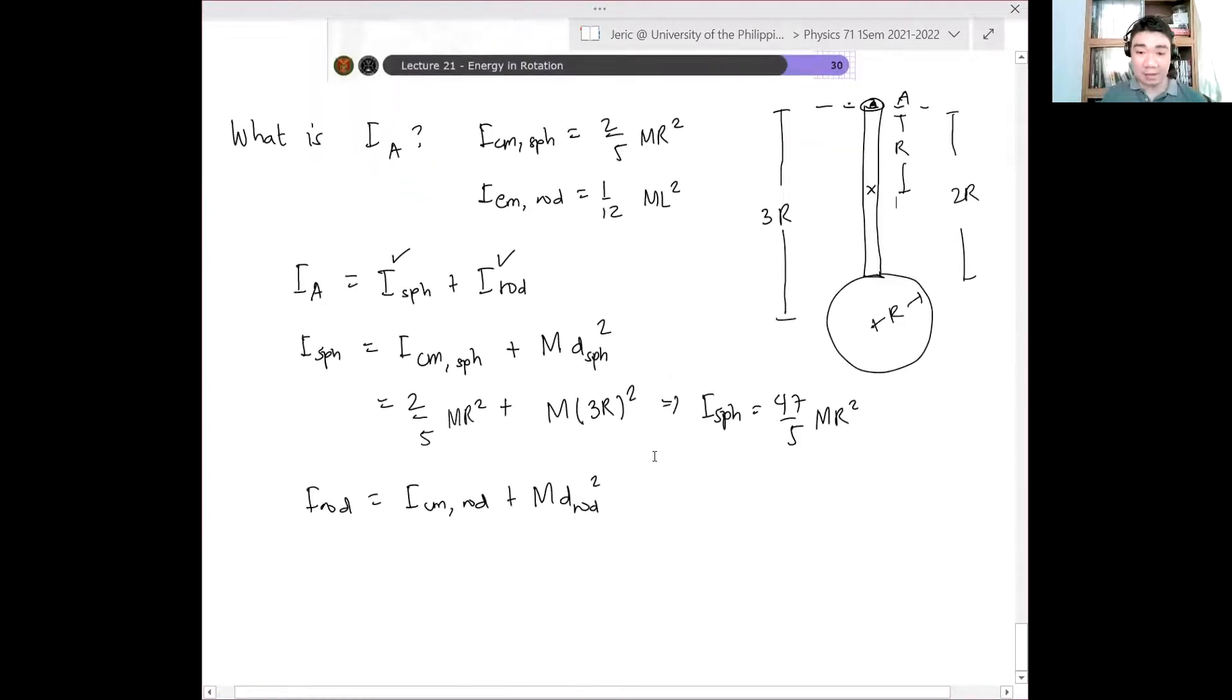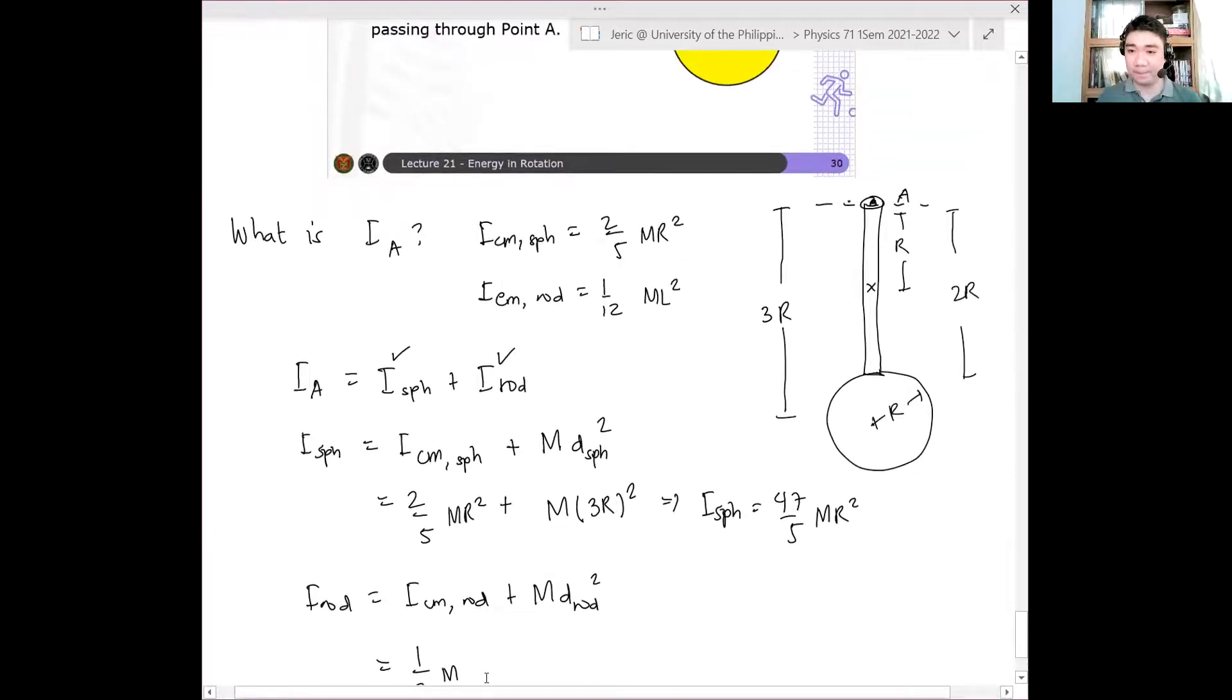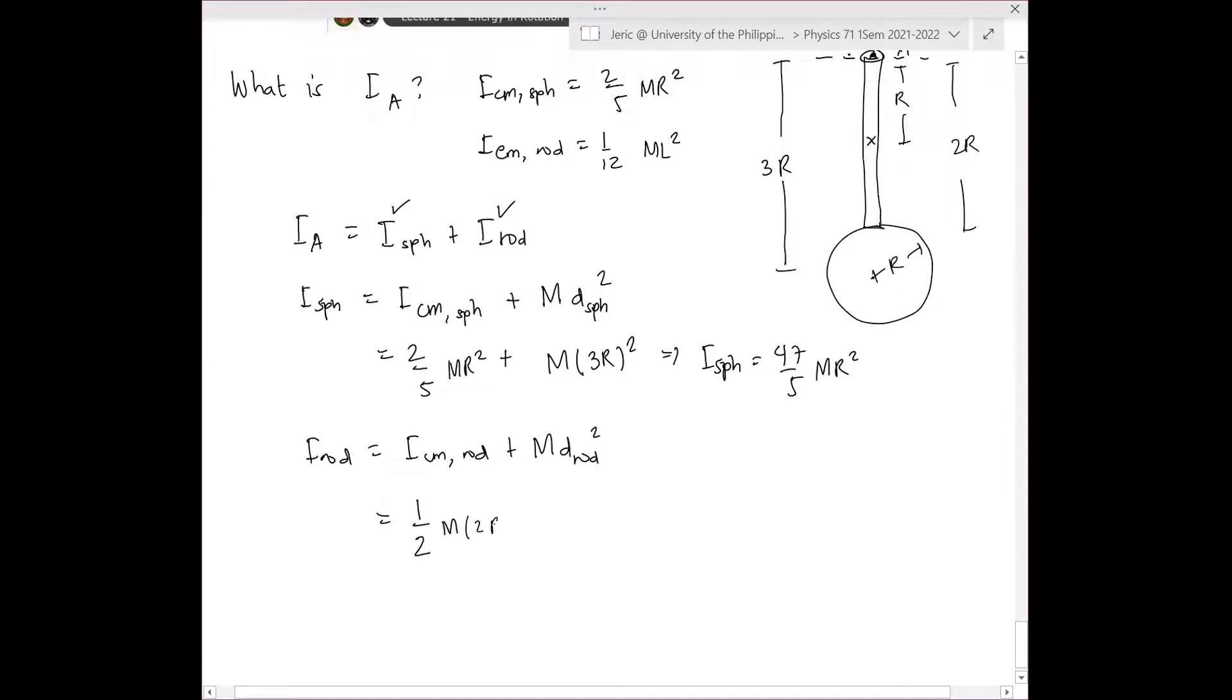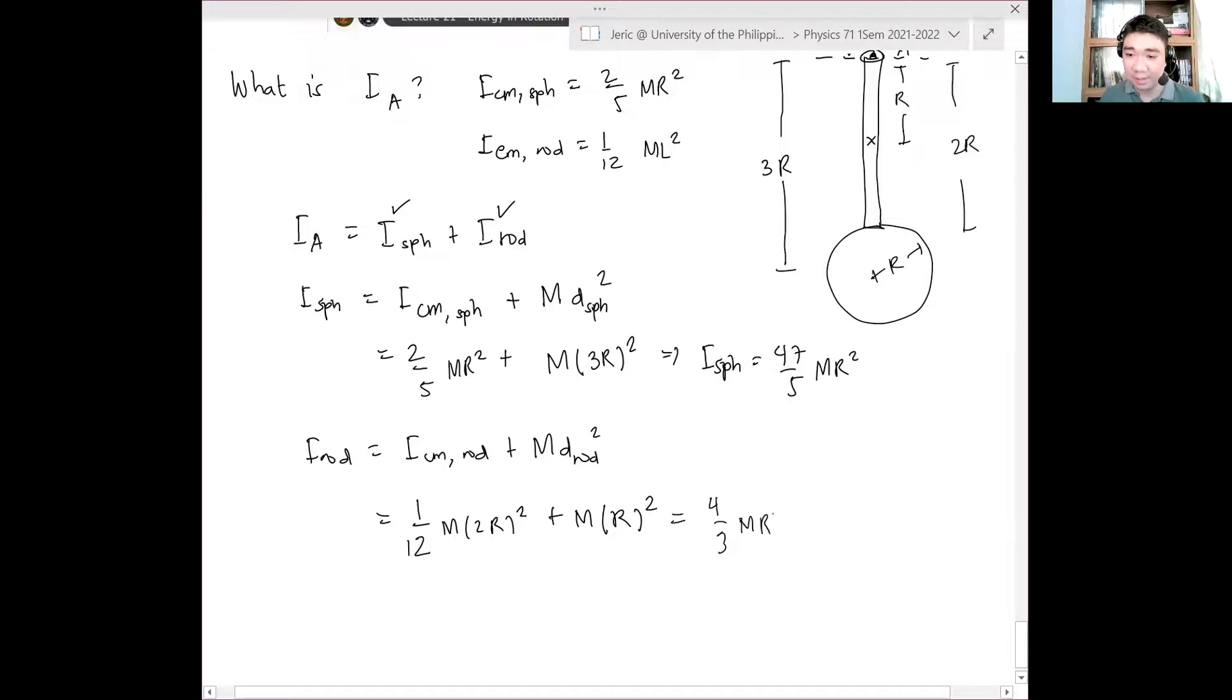So what will happen, we know that ICM of rod is simply 1/12 ML² where L is the total length of the rod. But what is the length of the rod here? 2R. Correct. So this is 1/12 M times 2R quantity squared plus M times R quantity squared. And hence, from there, what comes out, please calculate, so this is 1/3 plus 1, we have 4/3 MR².